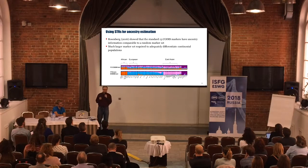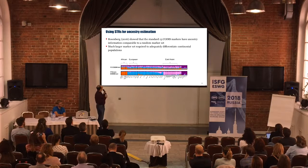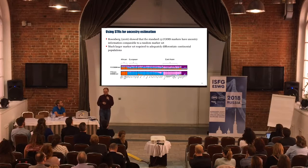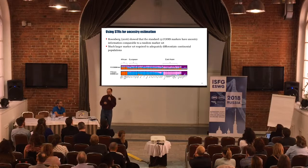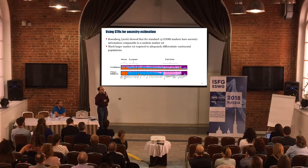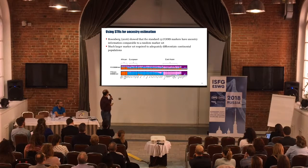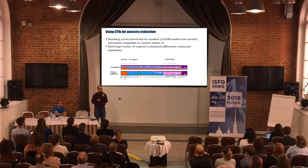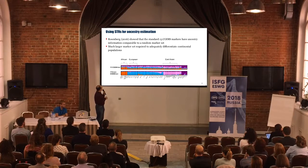Well, it certainly is useful for some things. This is looking at if we can use STRs in an ancestry context. Back in 2016, Rosenberg showed that with a set of 13 core markers, the ancestry information you got was comparable to just a random marker set, and that you actually need many, many more STRs to be able to do discrimination or ancestry interpretation from STRs.